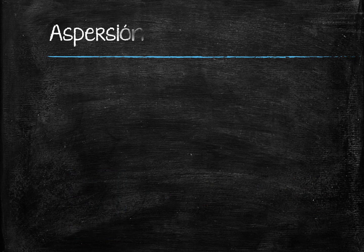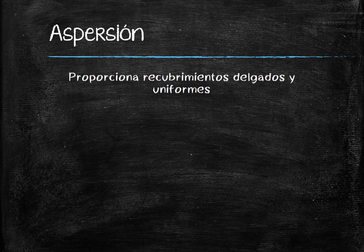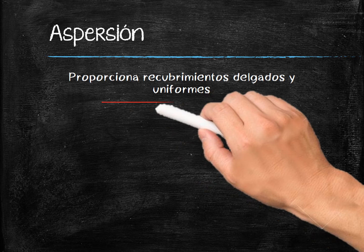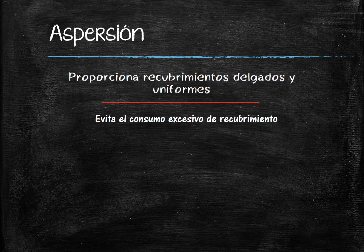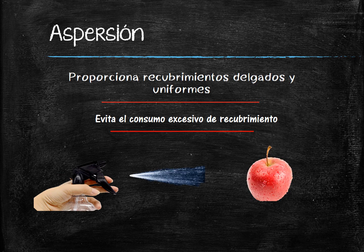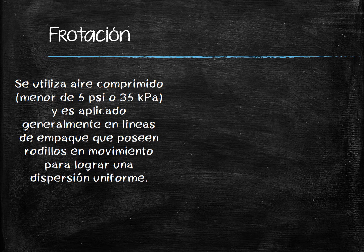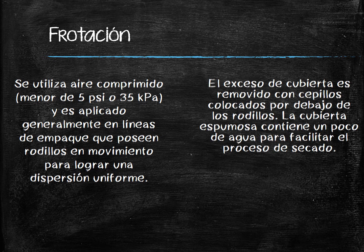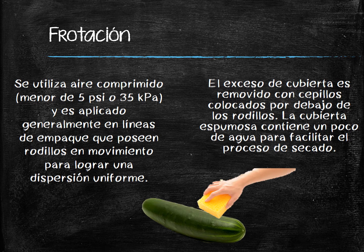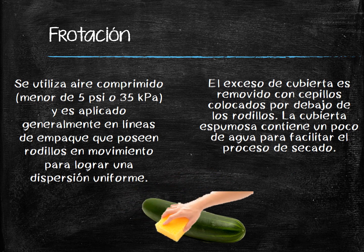Aspersion provides thin and uniform coatings and prevents excessive coating consumption. Brushing uses compressed air and is generally applied to packaging lines that have moving rollers to achieve even dispersion. The excess cover is removed with brushes placed underneath the rollers, and the coating contains a little water to facilitate the drying process.